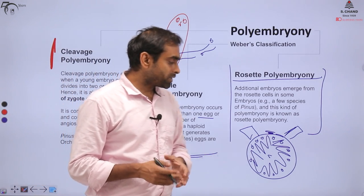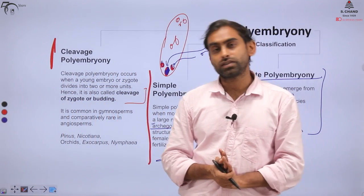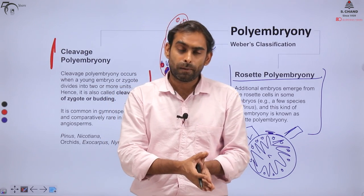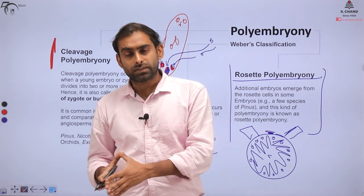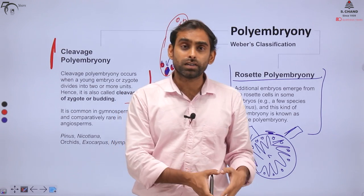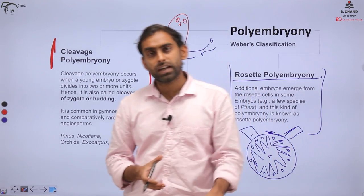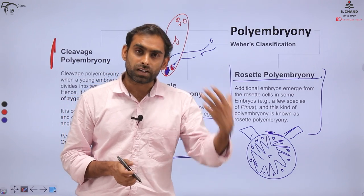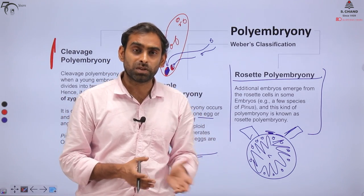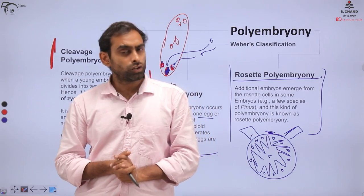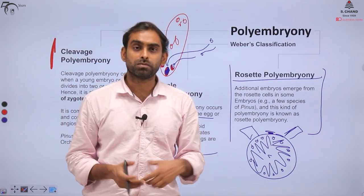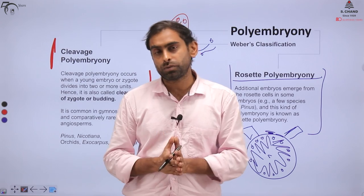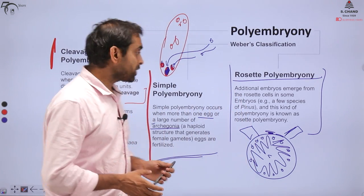To summarize our entire discussion: normal fertilization has two exceptions. One is Apomyxis, where embryo development is vegetative — without fertilization. The other is Polyembryony, where even after fertilization more than one embryo forms. In this video we understood both processes, their types, their significance, and how they take place. I hope you learned and enjoyed learning them.